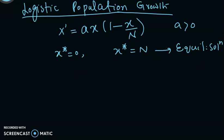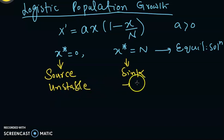We have also seen in the previous discussion that x* = 0 was a source, and this was a sink. Since it was a source, this point is unstable. This is stable as well as asymptotically stable.